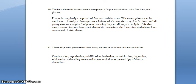The best electrolytic substance is comprised of aqueous solutions with free ions, not plasma. Plasma is completely comprised of free ions and electrons. This means plasma can be much more electrolytic than aqueous solutions, which comprise very few free ions. And all young stars are comprised of plasma, meaning they are all very electrolytic. This also means young stars can form giant electrolytic capacitors, which can store and release huge amounts of electric charge.